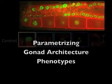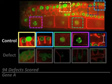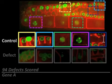Sorting these to group similar phenotypes also grouped genes with similar functions. To analyze phenotypes computationally, we parameterized them by scoring for defects in gonad architecture. In the colored boxes are examples of five regions of a control gonad; below, the same regions are shown when specific defects are present. Overall, we parameterized the phenotype for each gene by scoring for 94 possible defects.